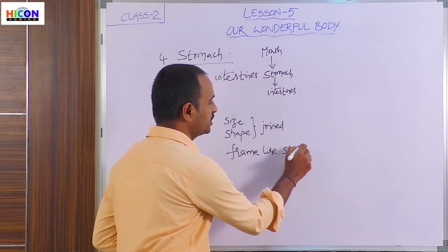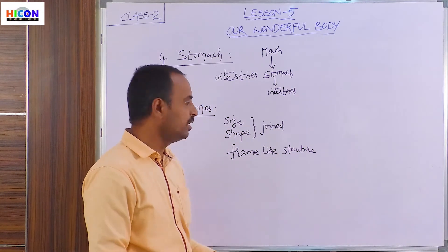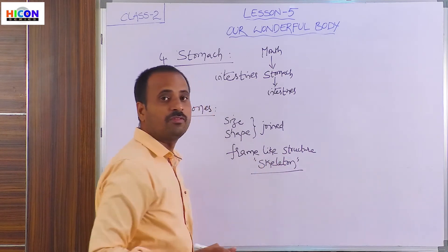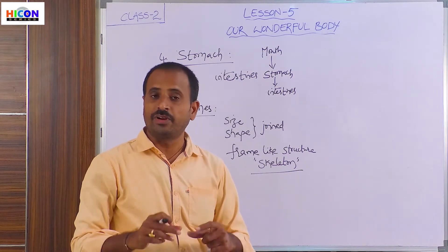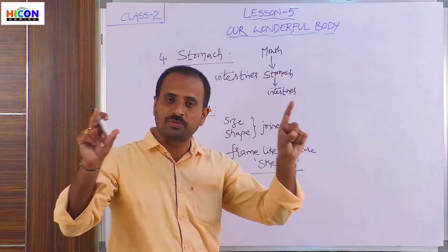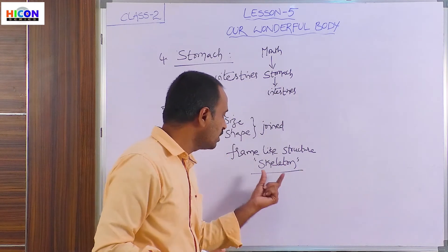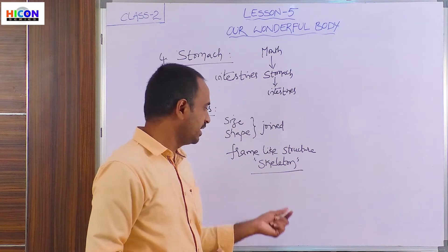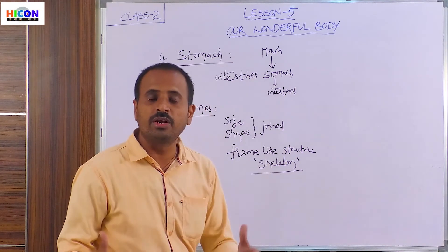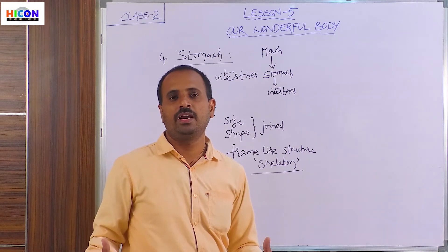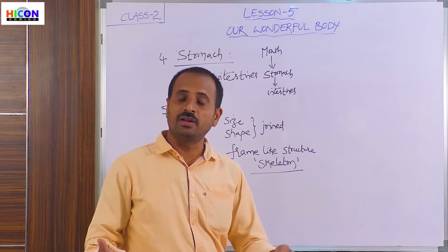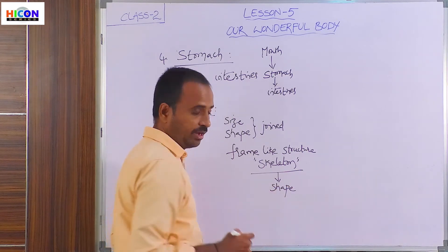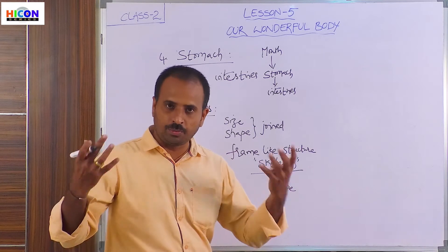This frame-like structure formed by the bones is called a skeleton. The frame-like structure formed by various types of bones is called a skeleton. Because of this skeleton, we are getting a shape. This skeleton gives us a shape and all human beings have a fixed shape. The shape we have is due to our skeleton, and the skeleton also gives support to our body.